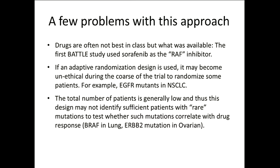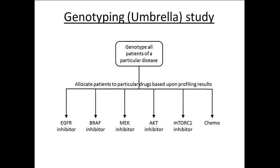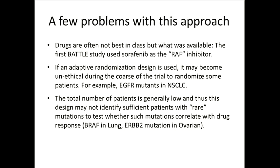One problem is that the drugs used are often not best in class, but whatever you were able to get for the study. You've got to get many drugs because you've got to cover as many patients as possible, since you're spending all this money to genetically profile them. So if the best BRAF inhibitor you can get at the time is sorafenib, you give patients sorafenib — which is what was done for BATTLE one, even though Keith had already clearly published that sorafenib was not a good BRAF inhibitor. And for BATTLE two, they just made the same mistake — they used AZD6244 for the BRAF patients, and we already knew that wasn't a great MEK inhibitor.